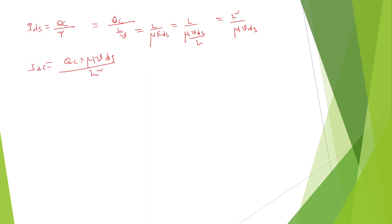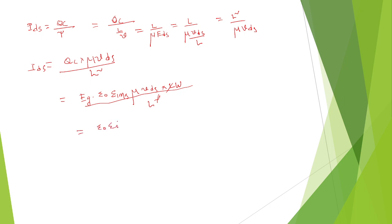Now we need to substitute the value of Qc. Qc can be defined as the electric field across the gate multiplied with epsilon-0 (free space permittivity), epsilon-ins (insulator material permittivity), mobility of the electron mu, VDS, length, and width of the transistor divided by L squared. After cancelling L squared, the remaining expression is epsilon-0 times epsilon-ins times mu divided by L, multiplied by W divided by L, times L, times EZ — the electric field across the gate.